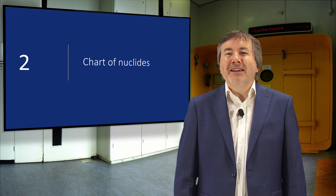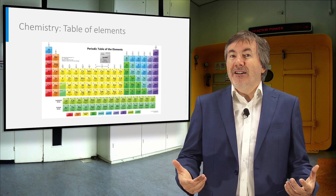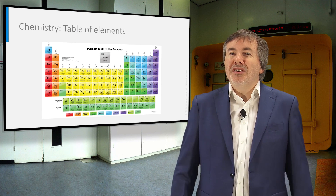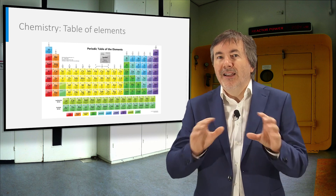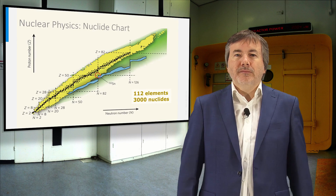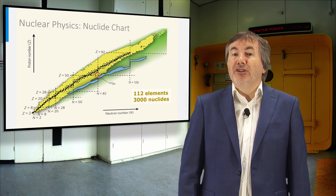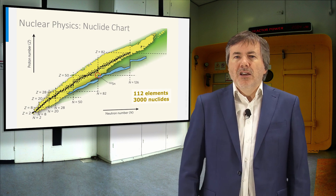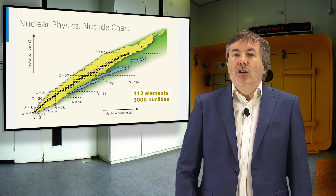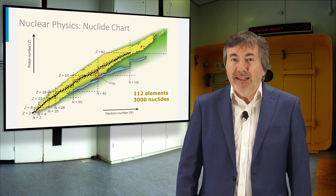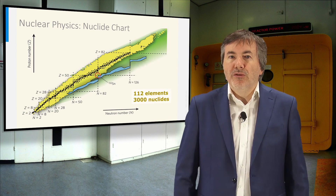Now that we know the structure of the atom, we can explore the chart of nuclides. In chemistry, we have the periodic table of elements, which is arranged according to nuclear charge number, and the groupings reflect the filling of electron shells around the nucleus. In a nuclide chart, all nuclides are plotted as a function of their number of protons and neutrons. There are roughly 3000 nuclides, but most are unstable. Only the black dots in the chart represent stable nuclides. Stability is higher around magical numbers corresponding to full nuclear shells.